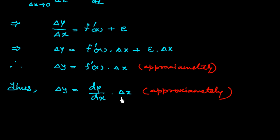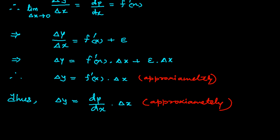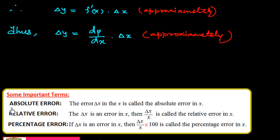Now I'll explain some important terms. First, absolute error: the error δx in x is called the absolute error in x. Second, relative error: if δx is an error in x, then δx/x is called the relative error in x. Third, percentage error: if δx is an error in x, then (δx/x) × 100 is called the percentage error in x.